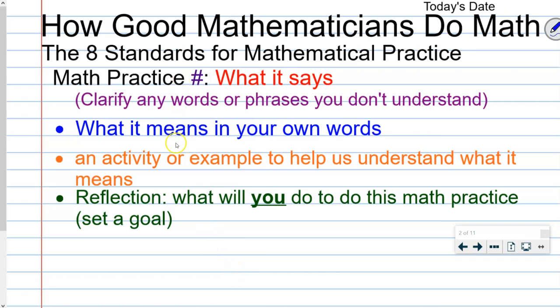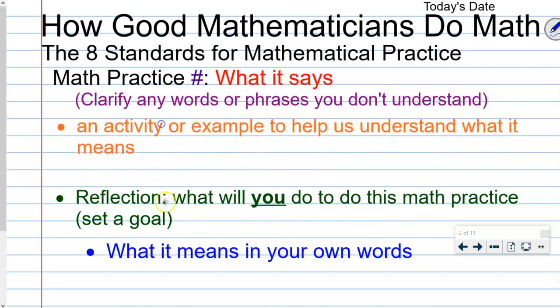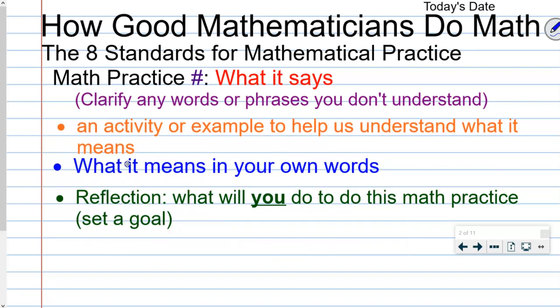As we go through math practice four, we're going to be taking notes in this format. We're actually going to switch this up today, and we are going to do an activity or an example to help us understand what it means, and then after that, that's when we're going to put it in our own words. And we'll finish up with the reflection. I'm discovering that students are having a hard time with the reflection piece, so I will start helping you out with that. You can write down what I help you write down, or you can choose a reflection or goal of your own.